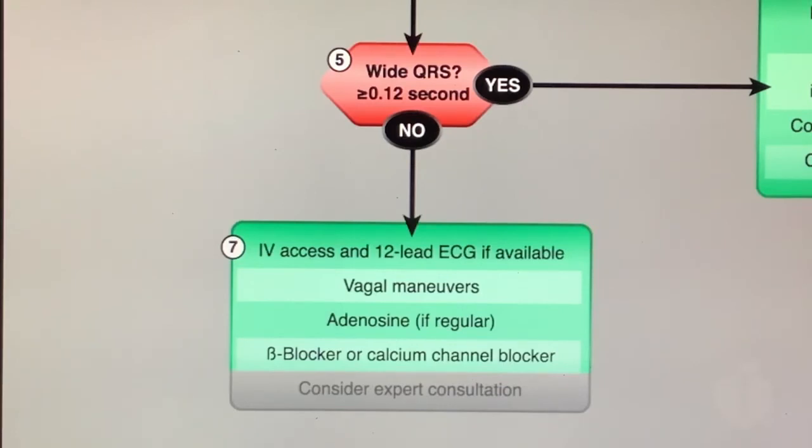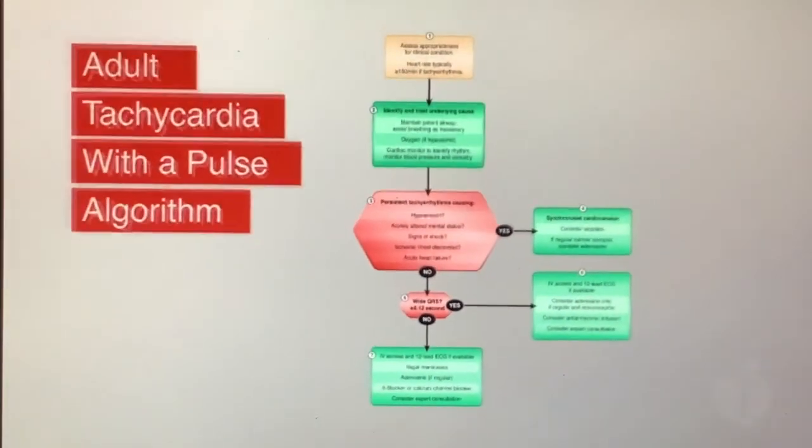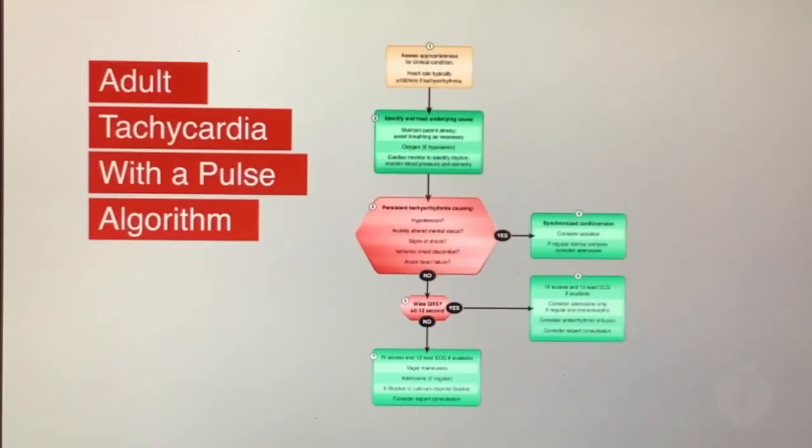Typically, you should obtain expert consultation if the tachycardia recurs. Treat recurrence with adenosine or longer-acting AV nodal blocking agents, such as non-dihydropyridine calcium channel blockers or beta blockers. Adenosine should not be given for unstable, irregular, or polymorphic wide complex tachycardias because it may cause degeneration of the arrhythmia to VF.